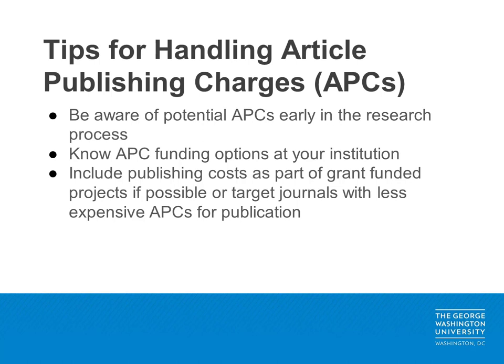A few last tips for handling article publishing charges. First, know the publisher for the journal where you're looking to publish your research — most APCs can be found on a publisher's website. Second, be aware of potential APC charges early in the research process, as knowing about potential APCs helps to ensure that you are able to publish in an open access format where your research will be more widely accessible. Lastly, know your APC funding options at your institution. Some institutions have department or library funds available to cover APCs, but many do not. Therefore, being able to include publication costs within a grant or targeting journals with less expensive APCs may be an important part of your research.